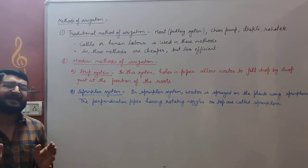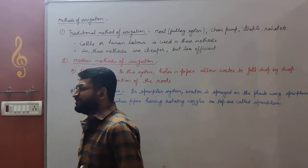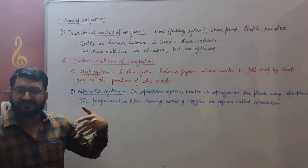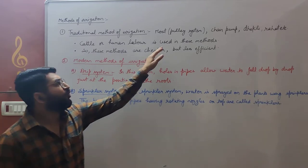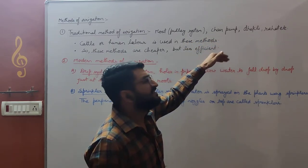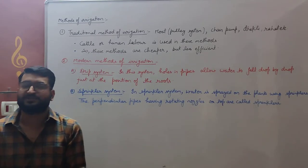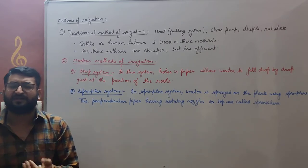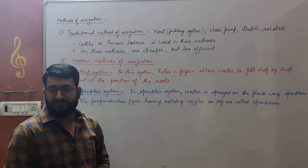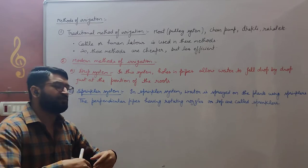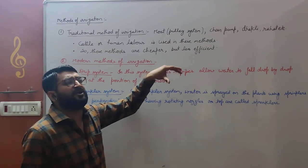Next we will discuss the methods of irrigation — how we can give water to the crop plants. There are two methods: traditional methods and modern methods. In traditional methods, examples include moat, pulley system, chain pump system, dhekli, and rahat. In these systems, small wells or pools are used with the water level quite accessible. Animals like bullocks or buffaloes and human labour are used to withdraw water and spread it in the fields. This is a very laborious and less efficient method, though cheaper.